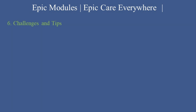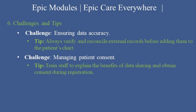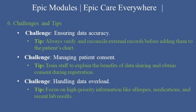Challenges and Tips. Here are some common challenges and how to overcome them. Ensuring Data Accuracy: always verify and reconcile external records before adding them to the patient's chart. Managing Patient Consent: train staff to explain the benefits of data sharing and obtain consent during registration. Handling Data Overload: focus on high-priority information like allergies, medications, and recent lab results. Pro tip: use Care Everywhere regularly to identify trends in patient health and collaborate effectively with other care teams.